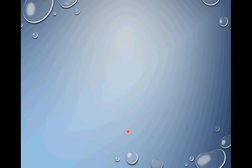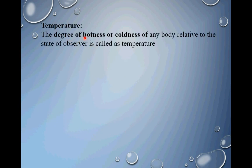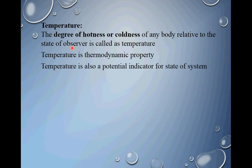In the first case, we are dealing with degree of hotness; in the second case, degree of coldness. That's why, as per definition, you have both words included: degree of hotness or coldness of any body relative to the state of observer, where state of observer means the amount of temperature available with the observer. It is a thermodynamic property and a potential indicator. Temperature helps you identify the state of a system — whether it has more temperature, less temperature, or is in thermal equilibrium with the surrounding. Once you have a property, there should be a method to measure it. So the question is: how to measure temperature?